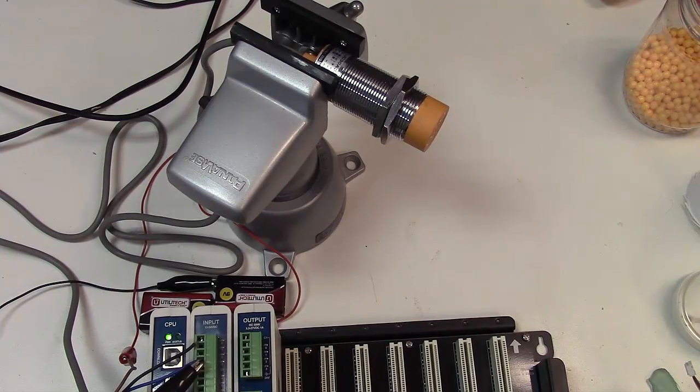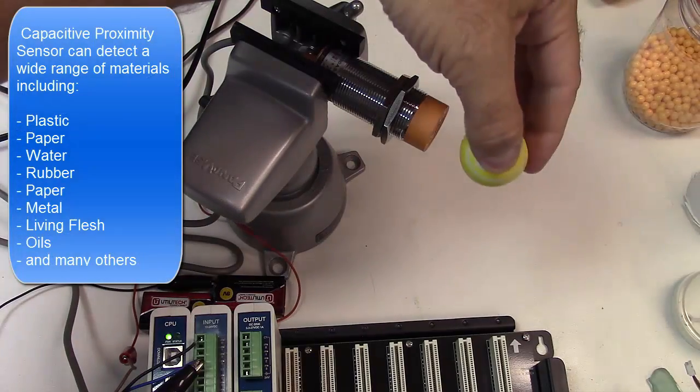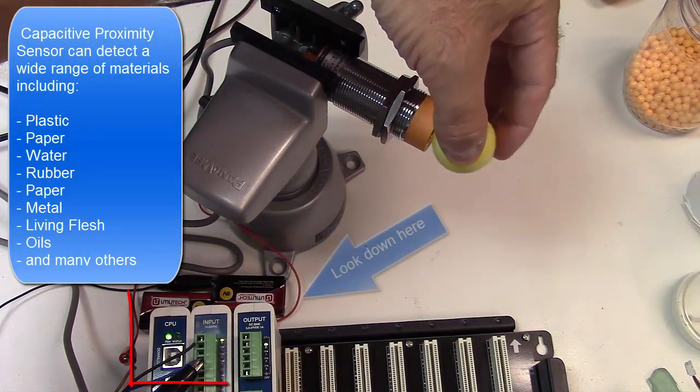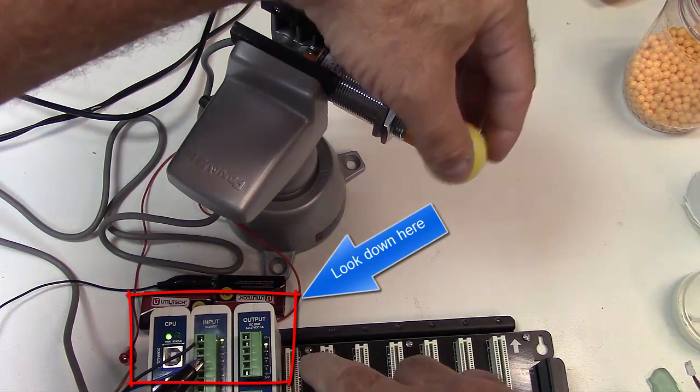Obviously, capacitive proximity sensors are useful because they can detect a wide range of materials. Rubber, if you look down here at the PLC, you can see the indicator light coming on.